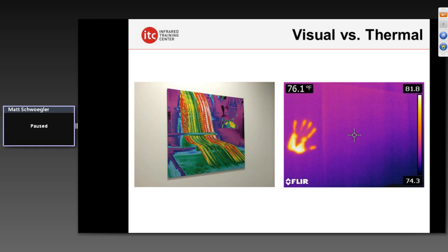In terms of similarities — visible light and infrared energy are both electromagnetic energy, they travel at the speed of light, can go through a vacuum, and have a waveform. But beyond that, the similarities stop. This visible light picture hanging in our office is what we see with our eyes, with all the various colors utilized in the image. It's what we're most familiar with.